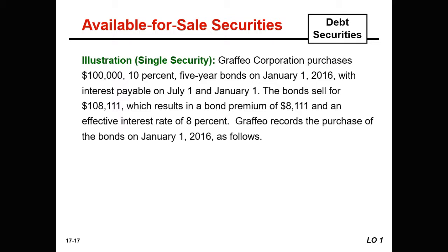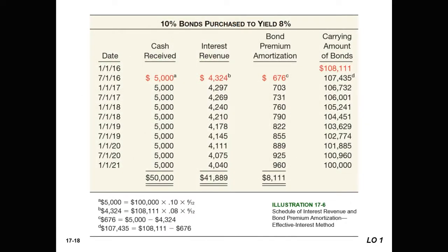We have the original debt investment at cost of $108,111 and the cash payout of $108,111. We will have a schedule of interest revenue and bond premium amortization. If you'll recall, in our last example it was a discount — this time we're going to show it as a premium using the effective interest rate method.